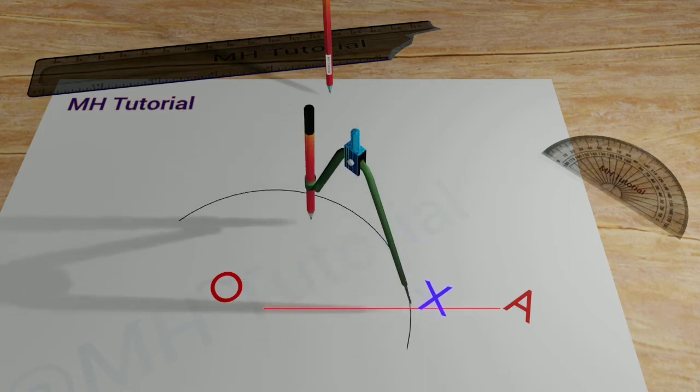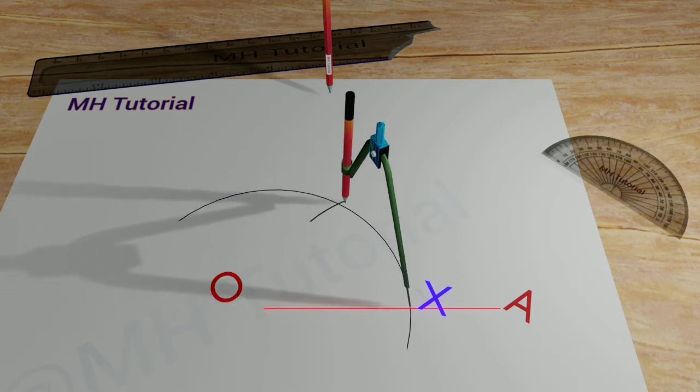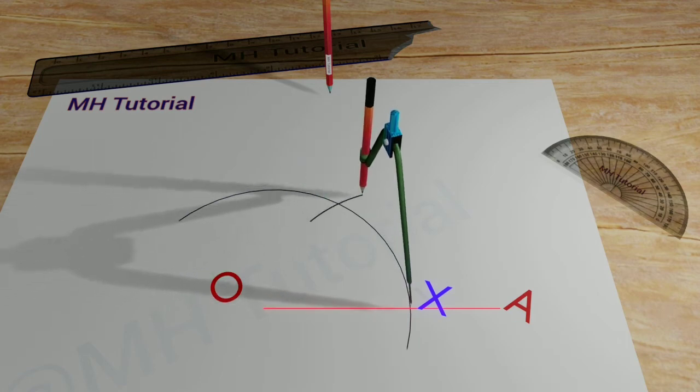Then, another circle arc of the same radius is drawn, with the tip of the compass placed at point X. It intersects the previous arc at point Y.